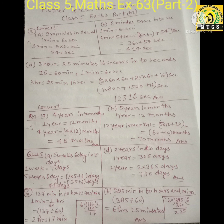Now question number 4. Question A: 4 years into months. 1 year is equal to 12 months, then 4 years is equal to 4 into 12 months. After multiplying you will get 48 months.